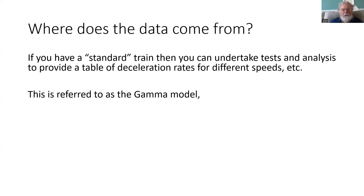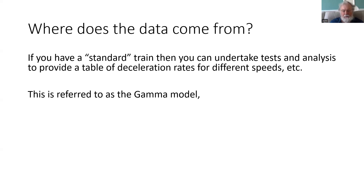For what we could call a standard train - such as a multiple unit produced for a mass market, like the 700s or 800s in the UK - you can undertake tests and analysis of the braking system. That gives you a table of deceleration rates for different speeds, and that is referred to as the gamma model.